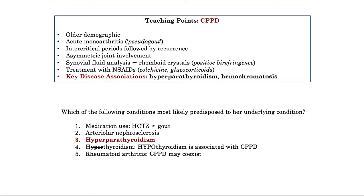Here are the key takeaways you should have for CPPD: note the older demographic, and the description of an acute and recurrent monoarthritis with asymmetric joint involvement to distinguish it from rheumatoid arthritis. For treatment, therapy is principally abortive with non-steroidals, colchicine, and glucocorticoids. But the key and subtle derivatives are the disease associations: hyperparathyroidism and hemochromatosis. You should stash these two little nuggets away.